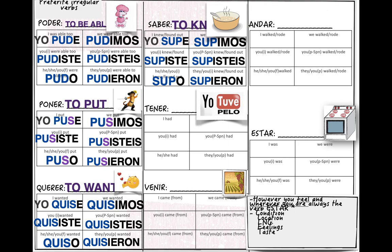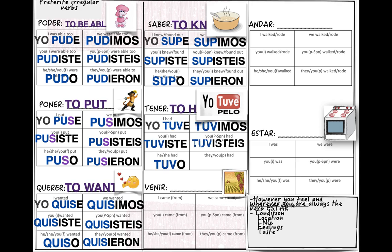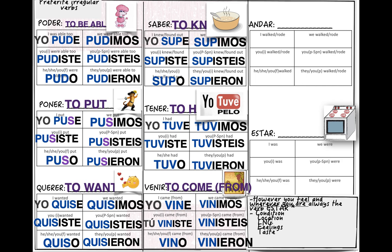For 'tener' (to have): yo tuve — for example, 'yo tuve pelo,' I had hair. Then we have 'venir.' If you look at the picture, that's a vineyard, and 'venir' means to come from. Remember, we need to add the word 'from,' which is 'de,' at the end of the verb. So if I want to say 'I came from,' I would say 'yo vine de.' The conjugation: yo vine, tú viniste, él vino, nosotros vinimos, vosotros vinisteis, ellos vinieron.